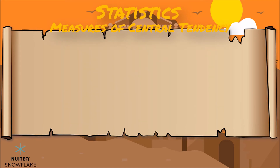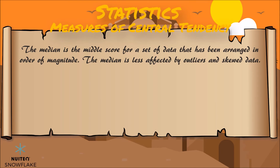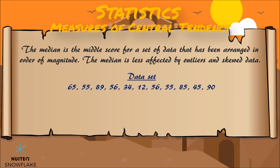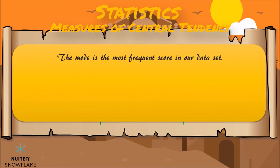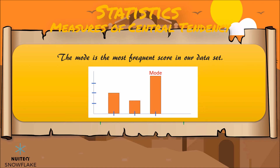The median is the middle score for a set of data that has been arranged in order of magnitude. The median is less affected by outliers and skewed data. We first need to rearrange that data into order of magnitude. Now, 56 is the middle mark, because there are five scores before it and five scores after it. And the mode is the most frequent score in our data set. On a histogram it represents the highest bar.